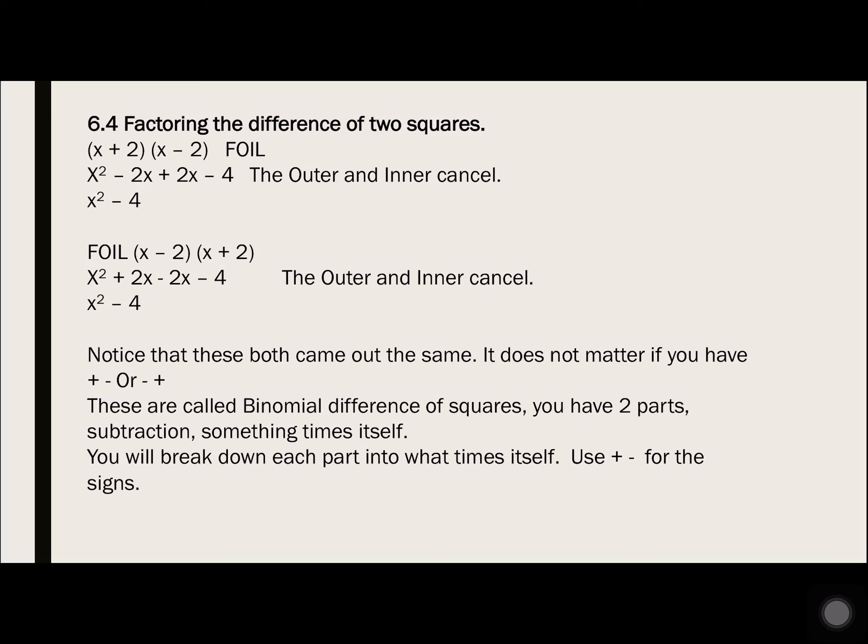Factoring the difference of two squares. Let's FOIL some things out and look at the answers. x plus 2 times x minus 2: First, x times x is x squared. Outside, x times negative 2 is negative 2x. Inside, 2 times x is 2x. Last, 2 times negative 2 is negative 4. Notice the outer and inner cancel — negative 2x plus 2x is 0.